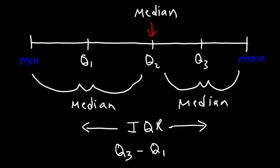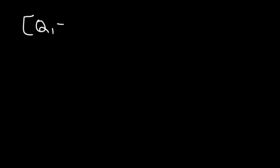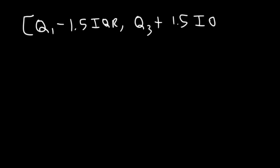The next thing I want to mention is how to identify if a number in the data set is an outlier. A number is not an outlier if it's within the range of Q1 minus 1.5 times the IQR to Q3 plus 1.5 times the IQR. If a number falls within this range it is not an outlier, but if it falls outside this range, then that number is an outlier. Let's work on an example.